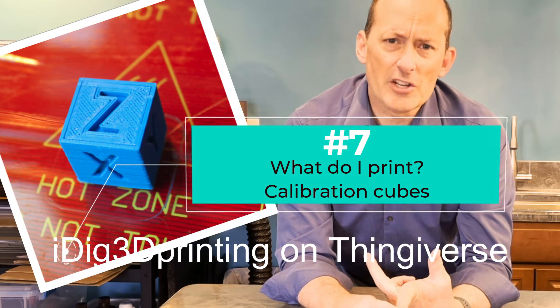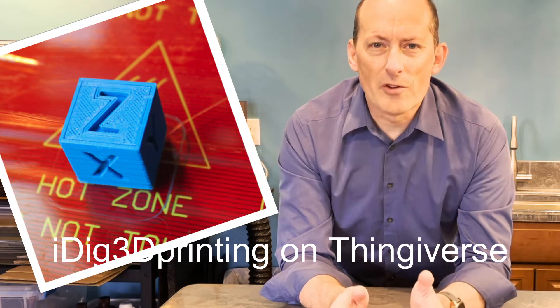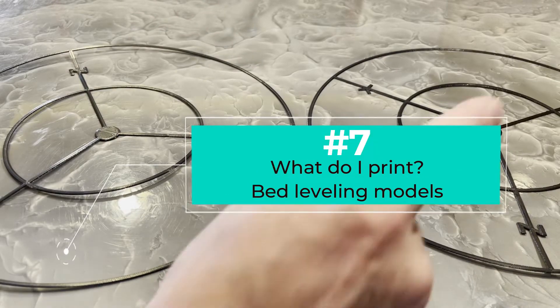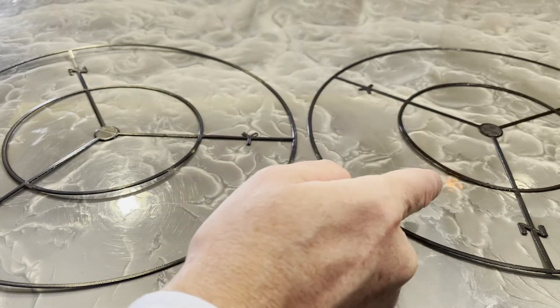There's also calibration cubes, which will show if your X, Y, and Z axes are lined up properly. You'll also find bed leveling models that will make sure that you've got your bed leveled.